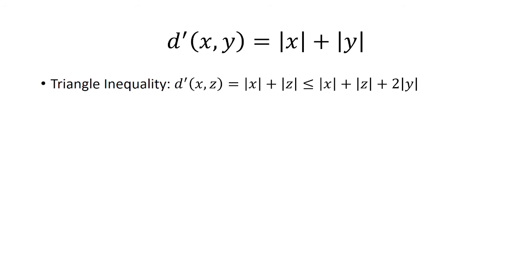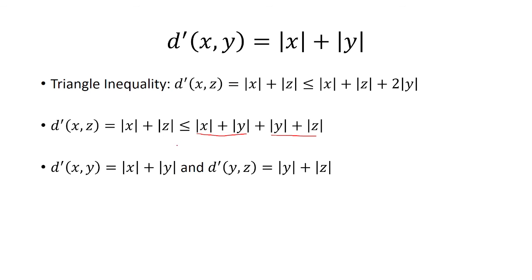So now we're going to break up the 2 absolute value of y as absolute value of y plus absolute value of y, but I'm going to put it in the order of first absolute value of x plus absolute value of y, and then absolute value of y plus absolute value of z. From here, the absolute value of x plus absolute value of y is d' of x comma y. And then the absolute value of y plus absolute value of z is d' of y comma z.